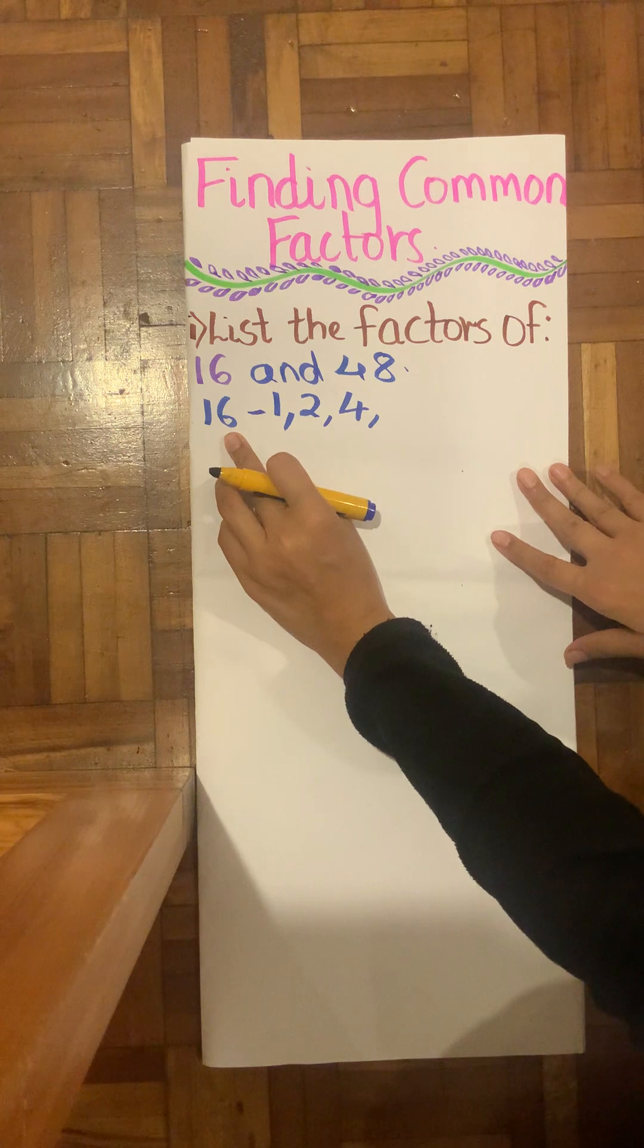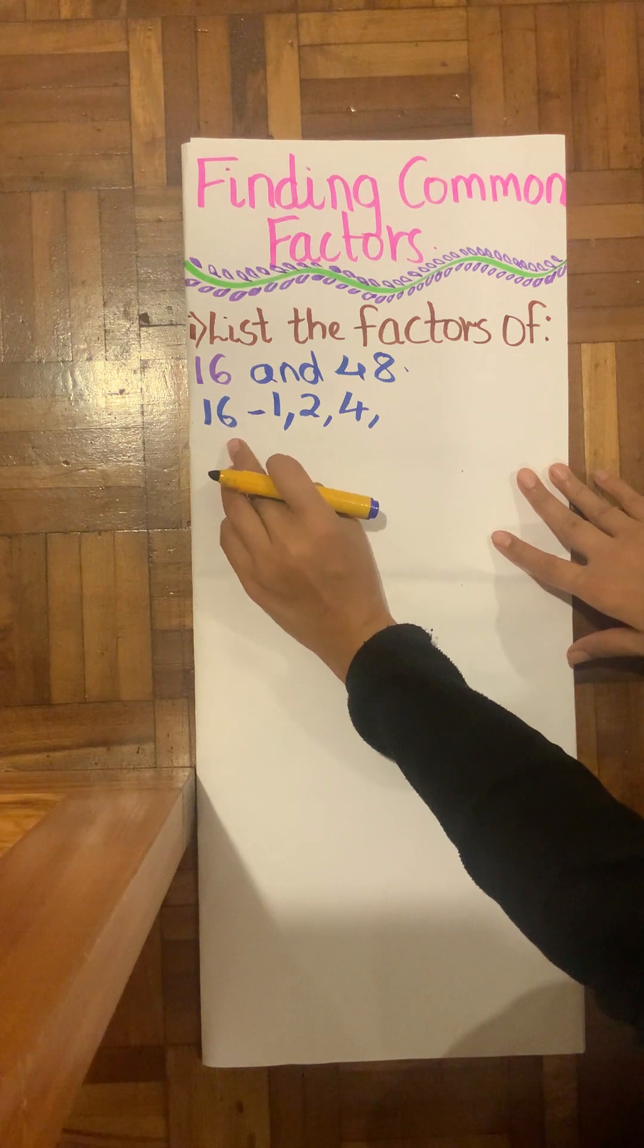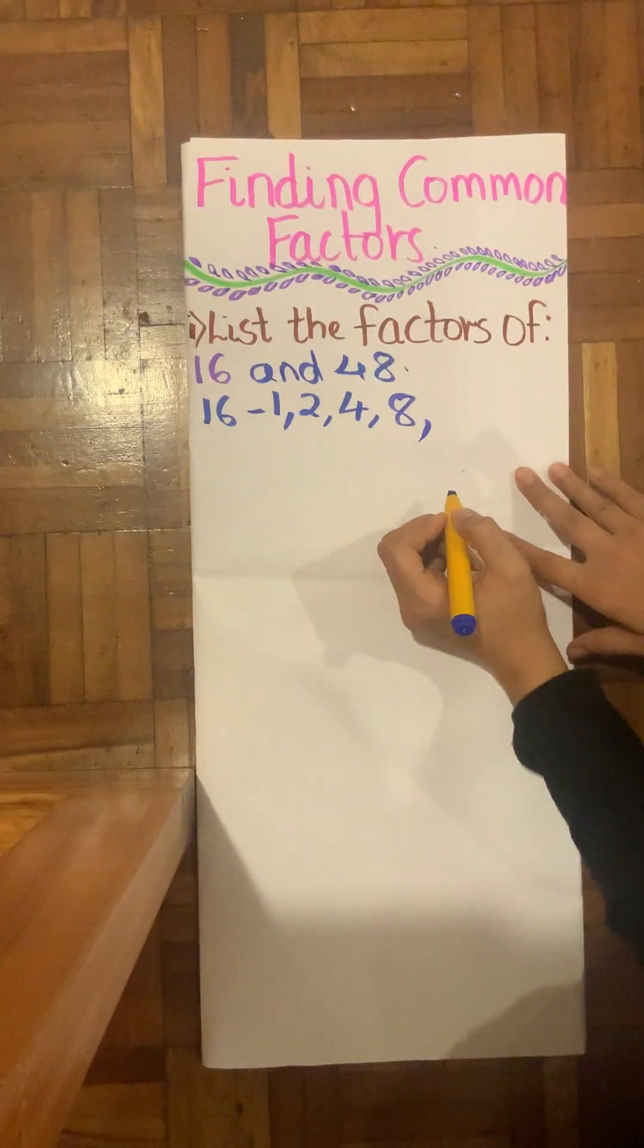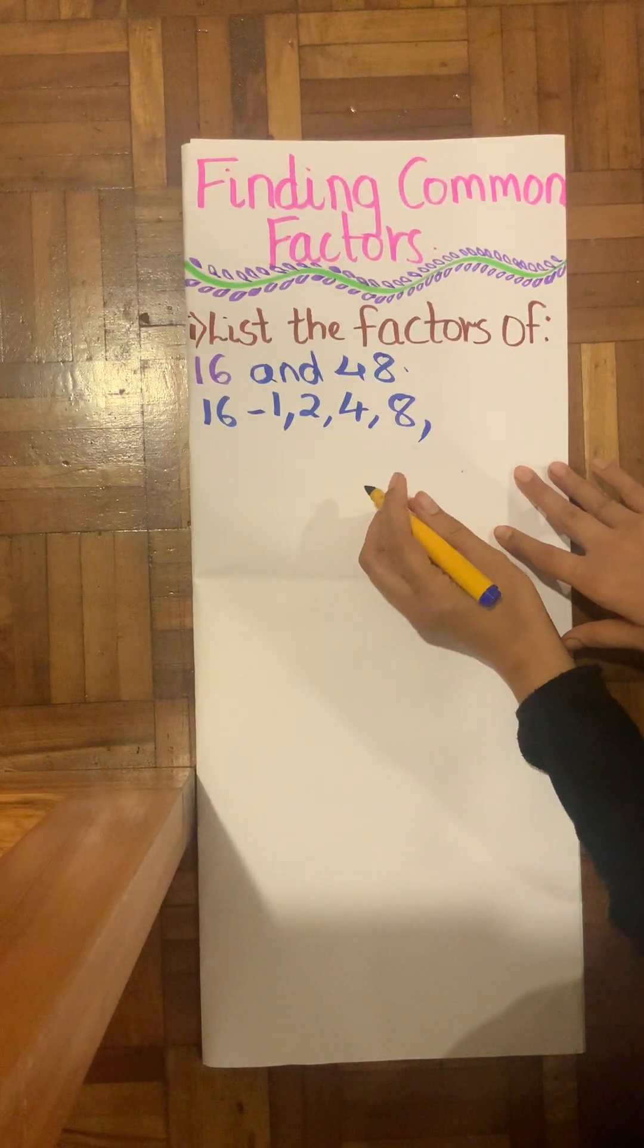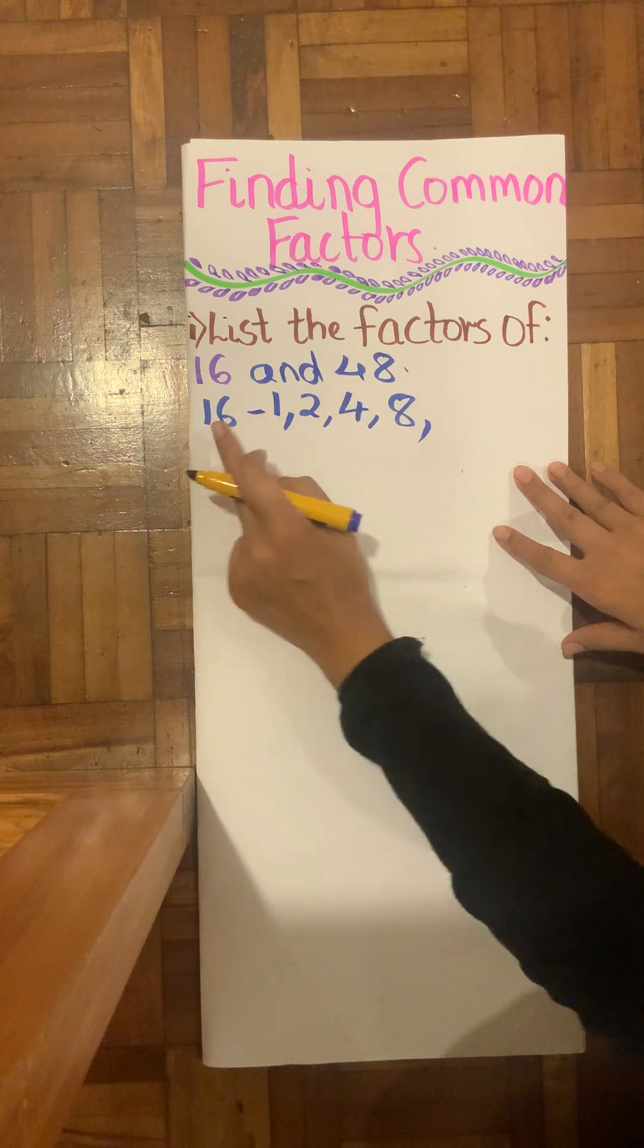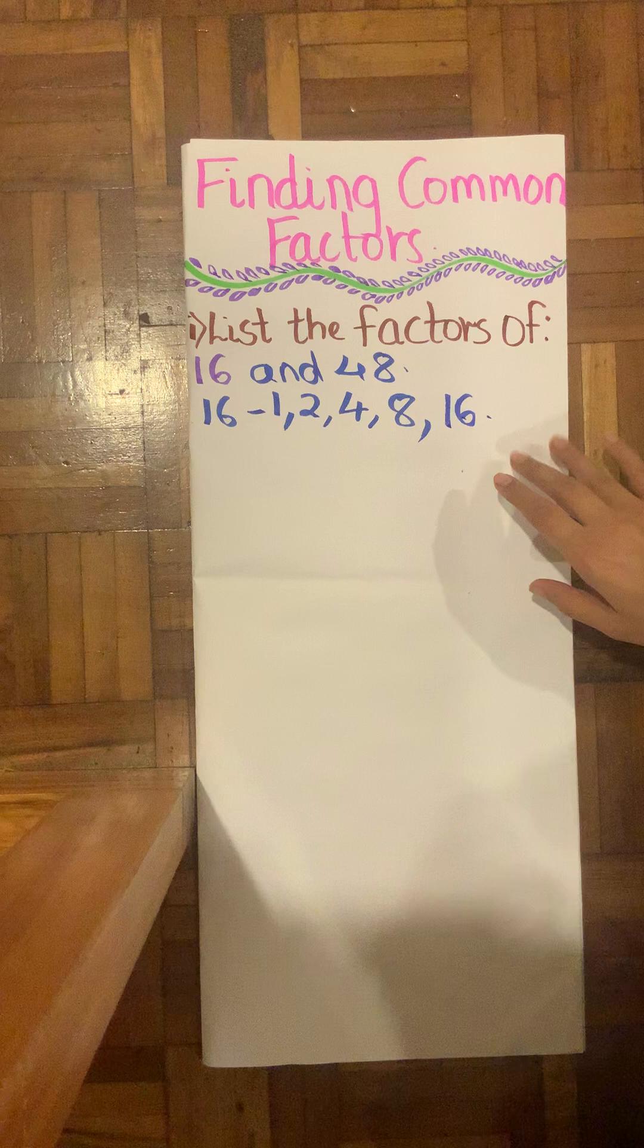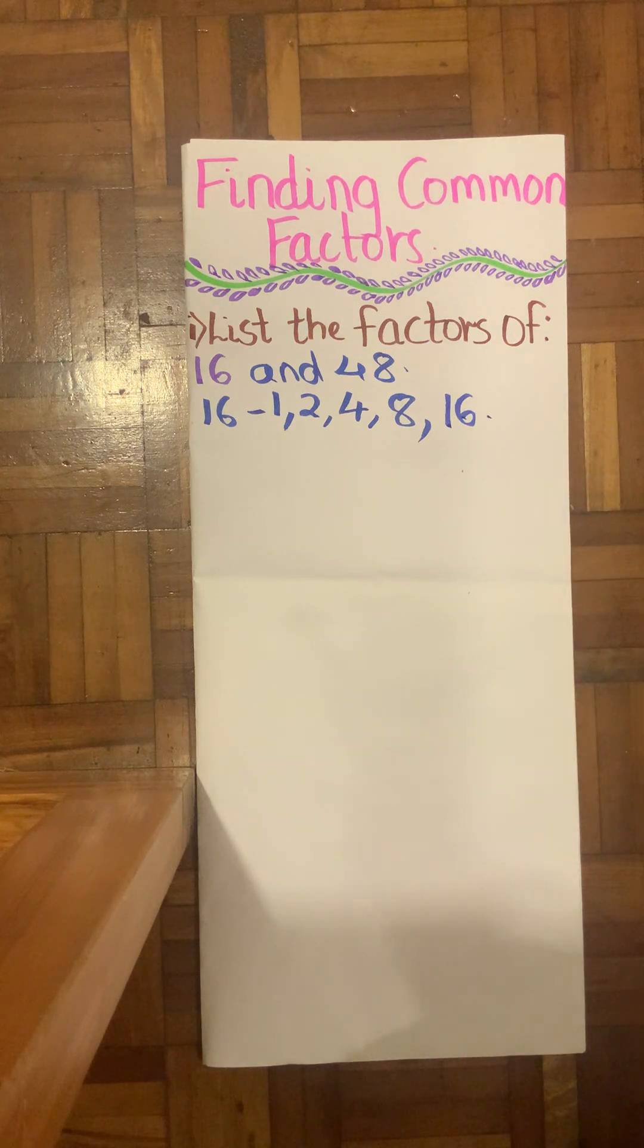6 times table, 16 doesn't come. 7 times 2 is 14. 8 times 2 is 16. We know about that. Now therefore, since 8 times 2 is 16 and it's a double of it, after that it's directly in the 16 times table that 16 comes.